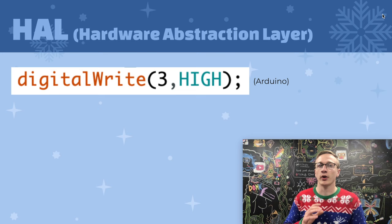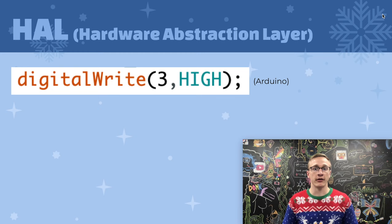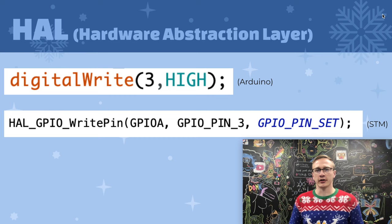If you're coming from a background in Arduino, this line of code should look very familiar to you. Writing 'digitalwrite 3, HIGH' will turn pin 3 on or high. Even though you may never have heard of hardware abstraction layer before, that's what this is. STM gives us a hardware abstraction layer as well, however it doesn't quite look as graceful. In essence, it's doing the same thing — they just took a different approach.